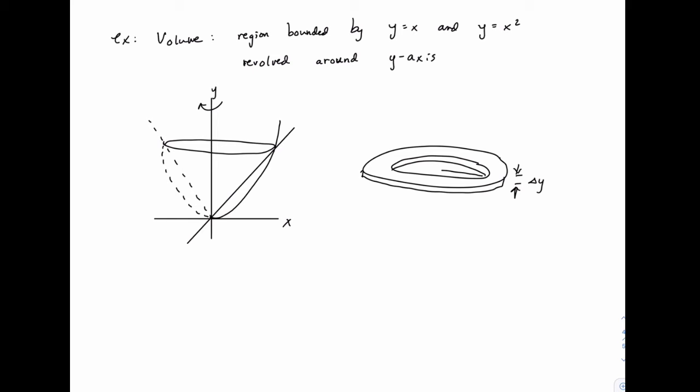And then we'll have an inner radius here and an outer radius to the outer edge. So once you recognize that, it just becomes a problem of figuring out those values for the radius, because then the area function will be pi capital R squared minus pi little r squared, and then the volume will be the integral of that.